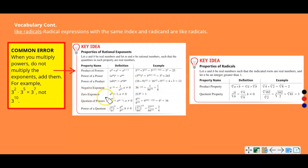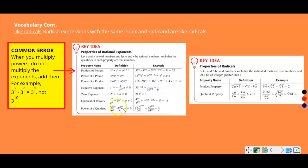The zero exponent: anything to the zero power equals one. Quotient means divide — same base, when you divide, you subtract exponents. And then power of a quotient: if you have a quantity in parentheses, everything inside the parentheses gets raised to that power.